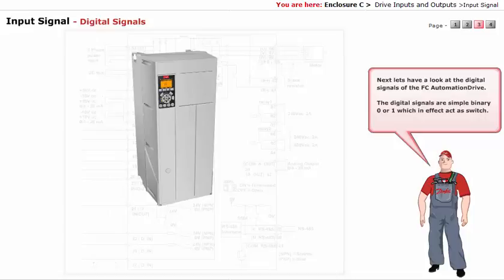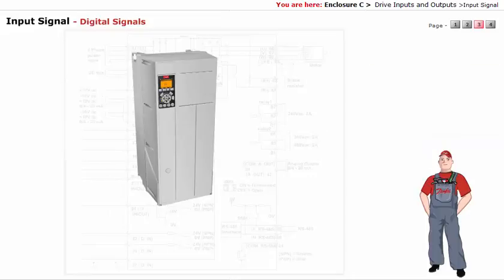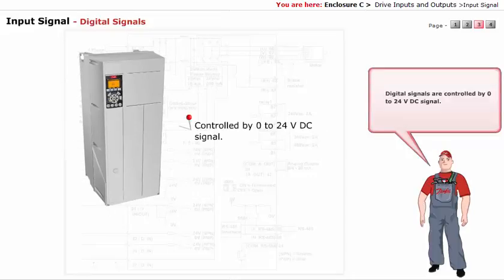Next let's have a look at the digital signals of the FC automation drive. The digital signals are simple binary 0 or 1, which in effect act as switch. Digital signals are controlled by 0 to 24 volt DC signal.